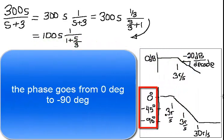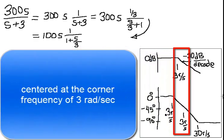The phase goes from 0 degrees to negative 90 degrees, centered at the corner frequency of 3 radians per second.